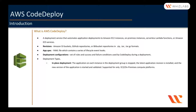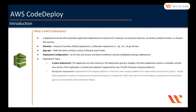The latest application revision is installed and the new version of the application is started and validated. Another deployment type is blue-green deployment. This is supported by all compute platforms. It provisions a new compute platform for a replacement environment, which we call as green, installs the latest application revision on the replacement environment, and reroutes the traffic from the old environment, which we call as blue, to the replacement environment, and terminates the old environment.